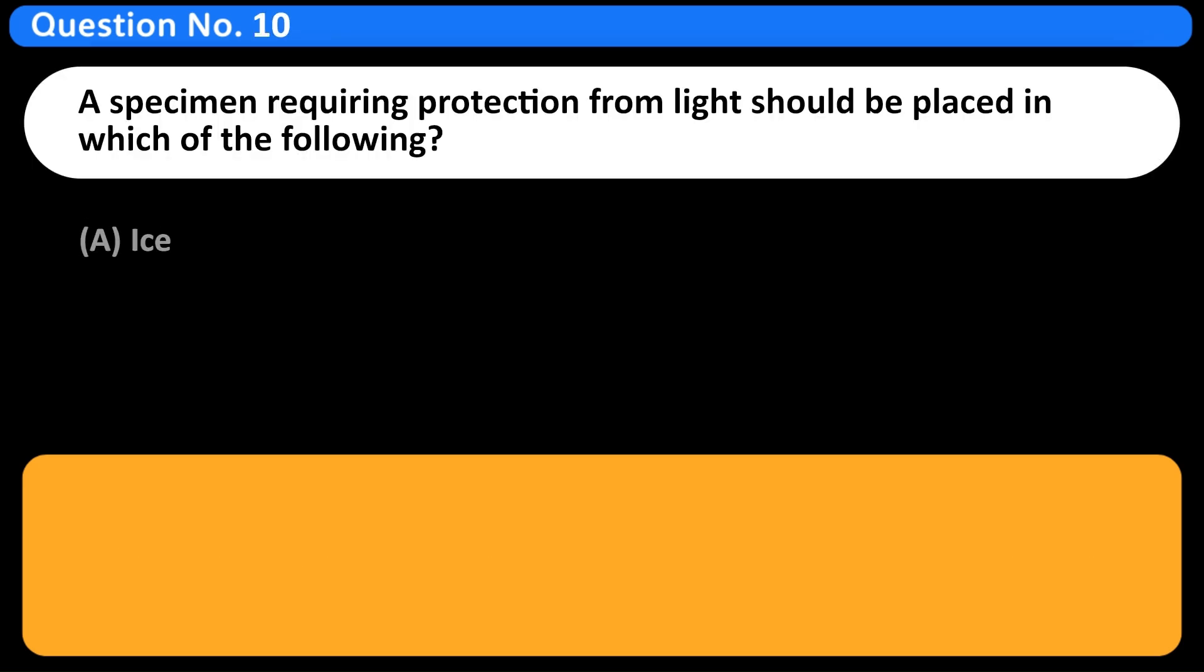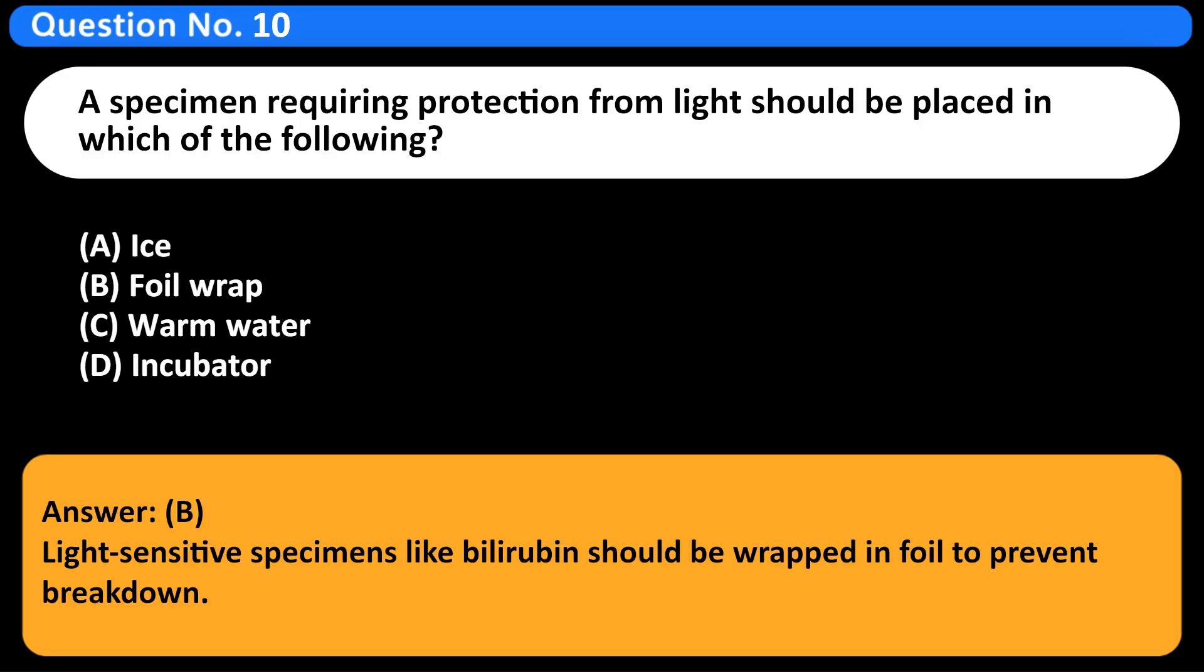A specimen requiring protection from light should be placed in which of the following? A. Ice. B. Foil wrap. C. Warm water. D. Incubator. Answer B. Light-sensitive specimens like bilirubin should be wrapped in foil to prevent breakdown.